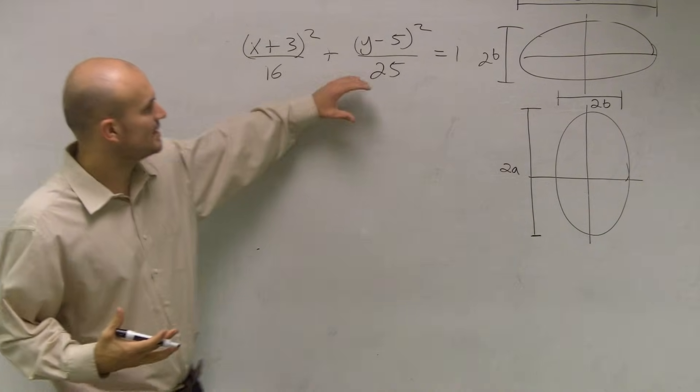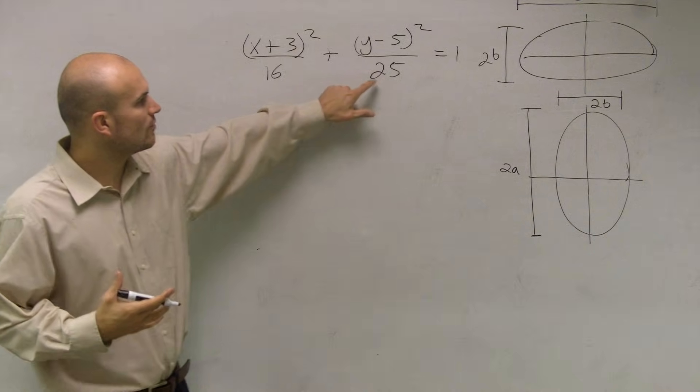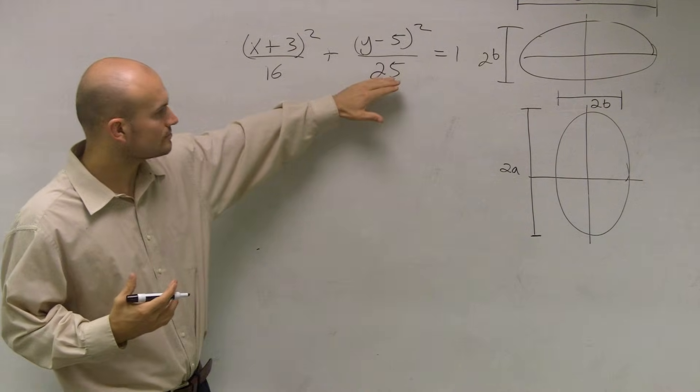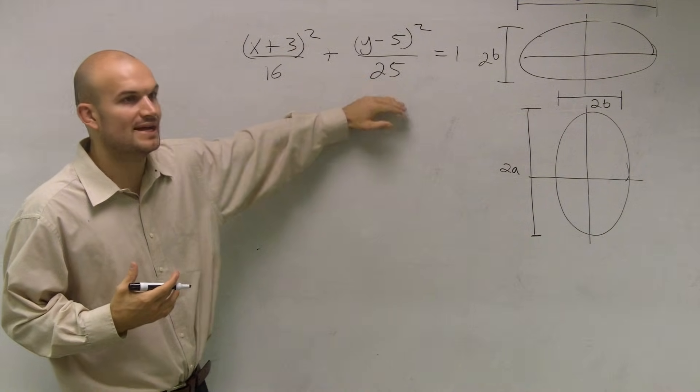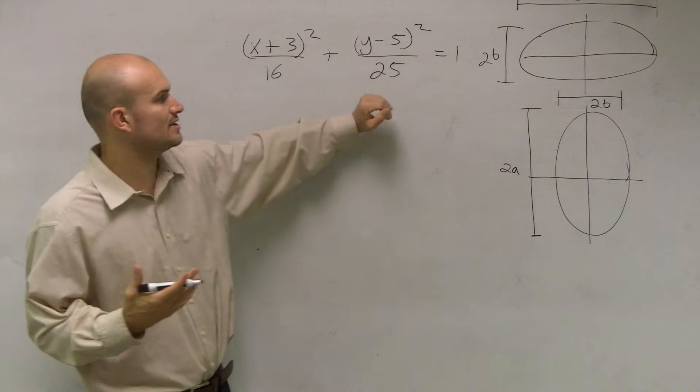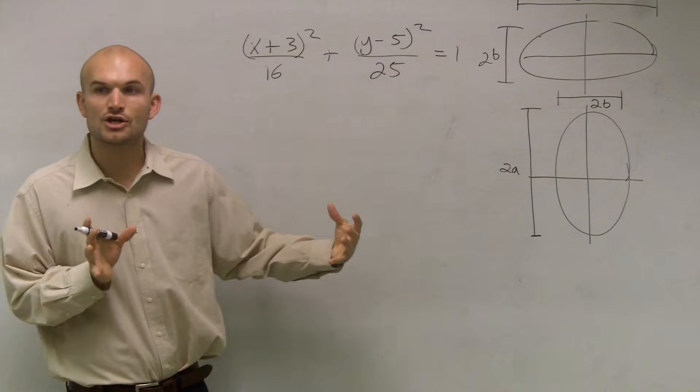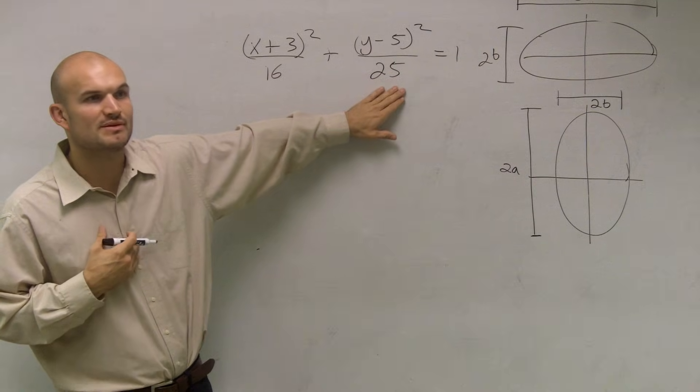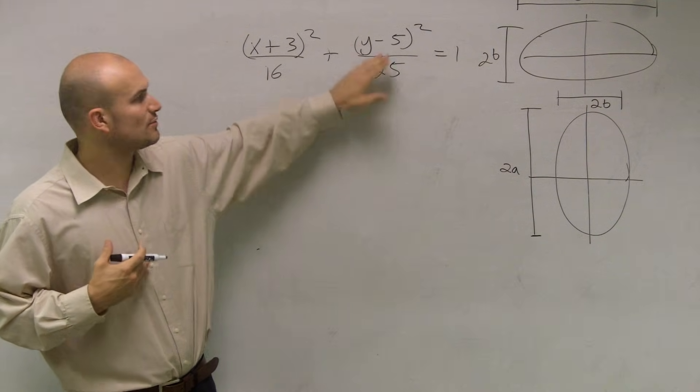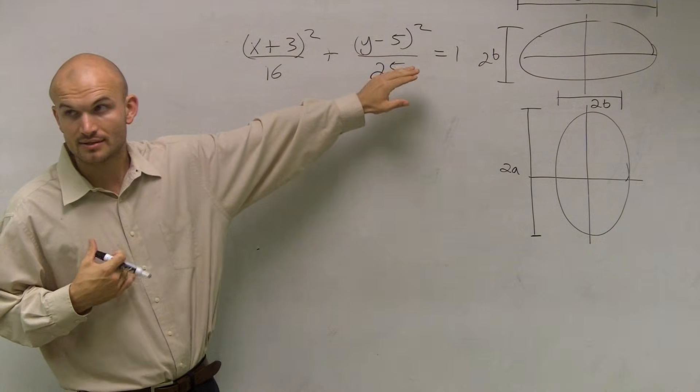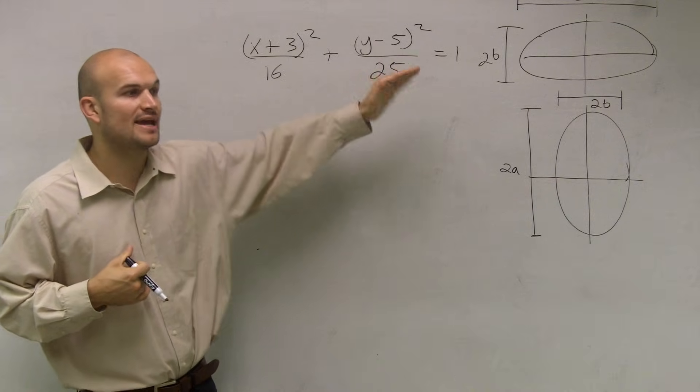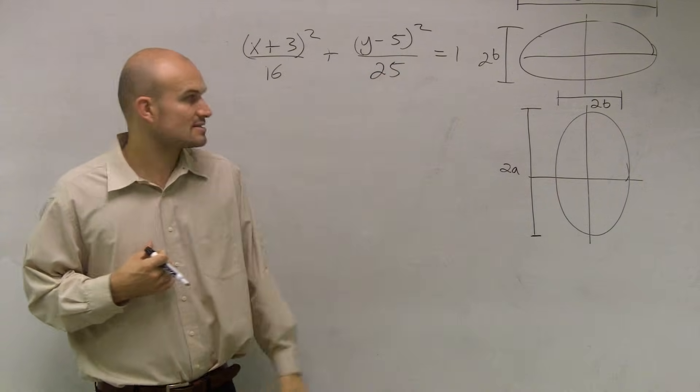So what we're going to look at is, if I notice what we have is our general form, we either have a squared or b squared. And I'll write out the form here in a second. But whichever one is larger is going to be your a squared. So I can say that this is going to be my a squared. Since my a squared is under my y coordinate, I know that this is going to be a vertical axis of symmetry.